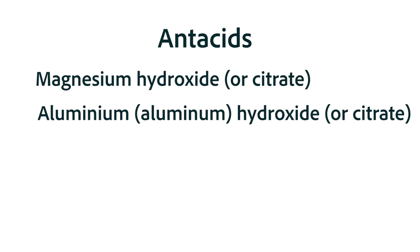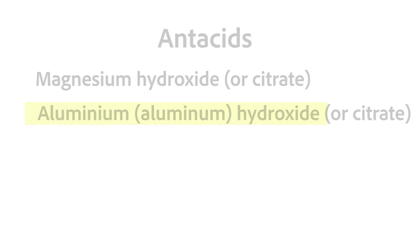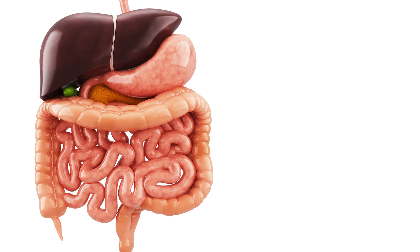Right now, we need to take a quick look at the most common antacids — the ones with the fewest side effects — which are the magnesium hydroxide and the aluminum hydroxide. All antacids work in a similar way, so let's use the magnesium hydroxide antacid as an example.